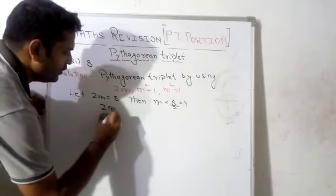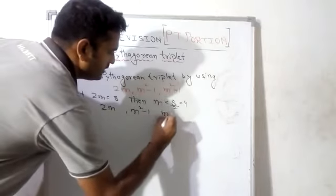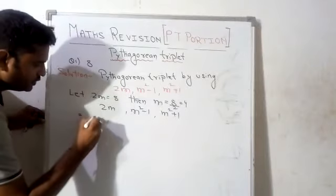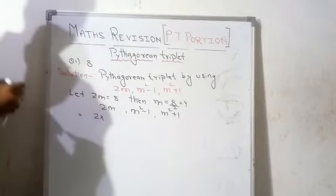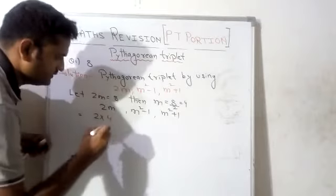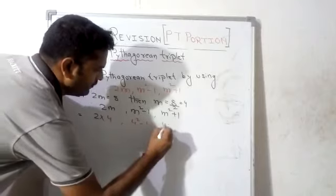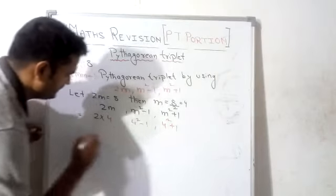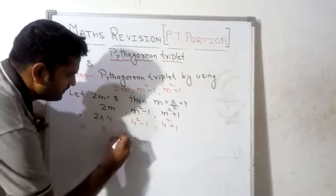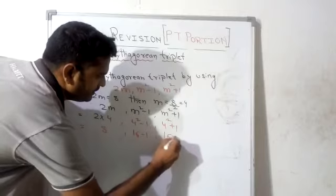Therefore, substituting m = 4: 2m = 2 × 4 = 8; m squared minus 1 = 4 squared minus 1 = 16 minus 1 = 15; m squared plus 1 = 16 plus 1 = 17.